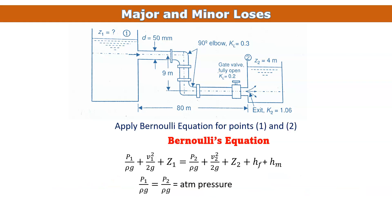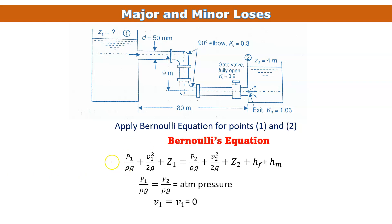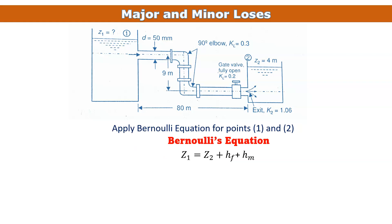Both points are open to atmosphere, so p1/ρg = p2/ρg = atmospheric pressure. At point one there is no flow, and at point two also no flow, so v1 = v2 = 0. These terms cancel out, and the Bernoulli equation simplifies to: z1 = z2 + hf + hm.